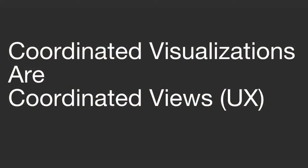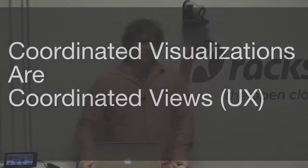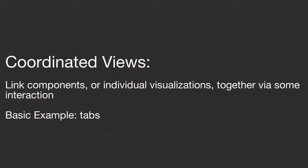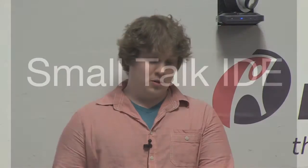So if data visualization is your UI, what is a coordinated visualization? Coordinated visualizations are coordinated views. A coordinated view is just linked components or individual visualizations via some interaction. A tab paradigm is a coordinated visualization. This has been around, as far as I can tell, since GUIs have been invented. Let's take a look at one of the best examples of that — the Smalltalk IDE.